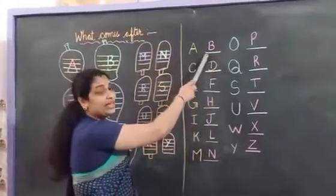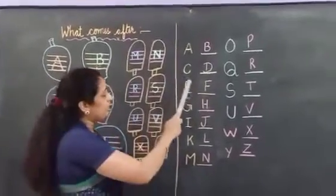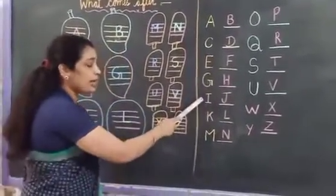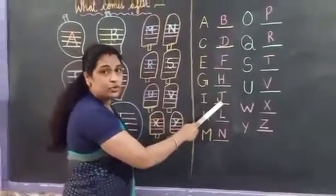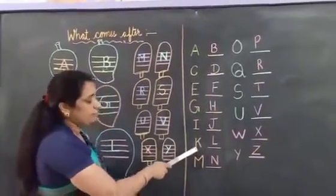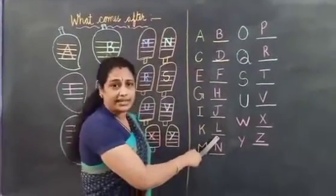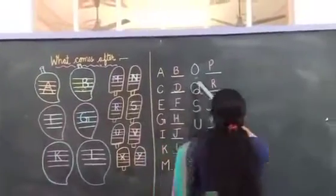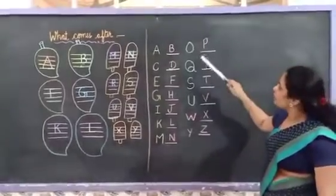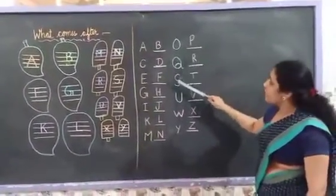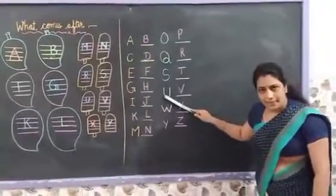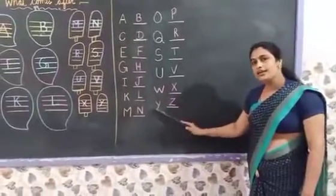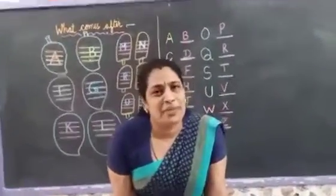Have you got it? K for kite, L for lion. Then which letter is this? M — M for monkey. N for nest. O for orange. After P for peacock. Q for queen. R for rose. S for ship. T for tiger. U for umbrella. V for van. W for watch. After X for x-ray. Y for young. Z for zebra. Okay, bye bye, have a nice day.